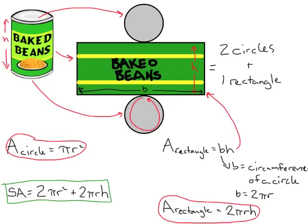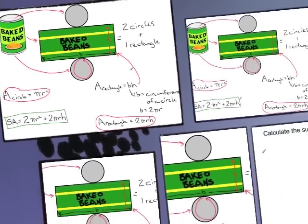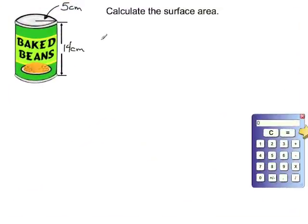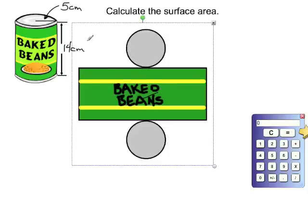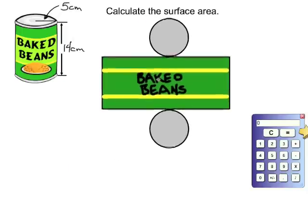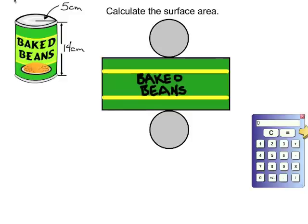We'll continue by looking at an example. We'll calculate the surface area of this cylinder — a can of baked beans with a radius of 5 centimeters and a height of 14 centimeters. It might be easier to think of our can as a net. Here is the net for the beans, and we can transfer the information from the diagram: radius is 5 centimeters and height is 14 centimeters. We always start by writing out the surface area formula.